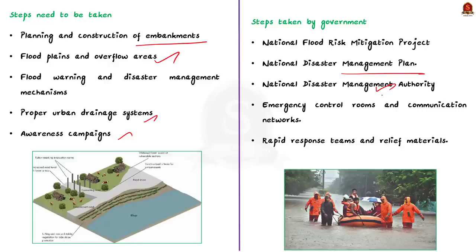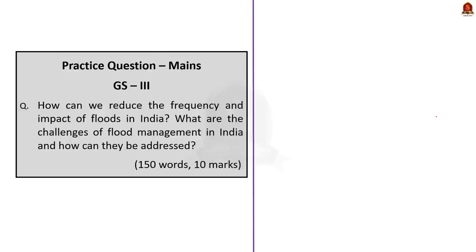It lays down policies, plans and guidelines for disaster management and coordinates the implementation of this policy. In addition to these institutional efforts, the government is also establishing emergency control rooms and connection networks in risk areas. The government also deploys rapid response teams and relief materials in flood affected region. These are the important steps taken by the government to mitigate floods in India. So, that's all regarding this discussion. In this discussion, we saw what are the causes of flood in Himalayan states. And we saw why particularly in 2023, Uttarkand and Himachal Pradesh are facing heavy flooding. Then we saw the steps that can be taken to avoid flooding. And finally, we saw the steps taken by the government. Now, with this, let us conclude this discussion and take up the next news article.